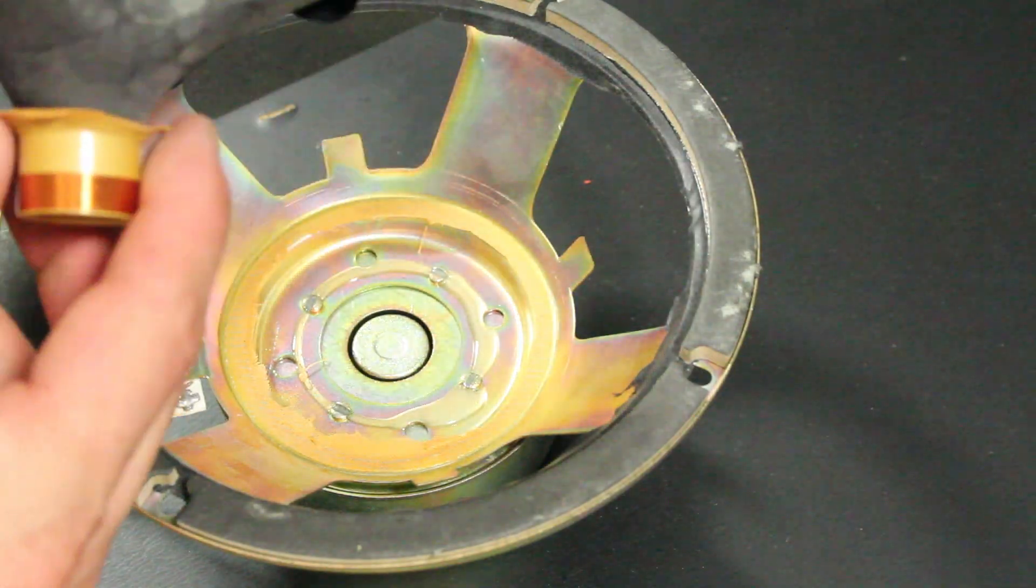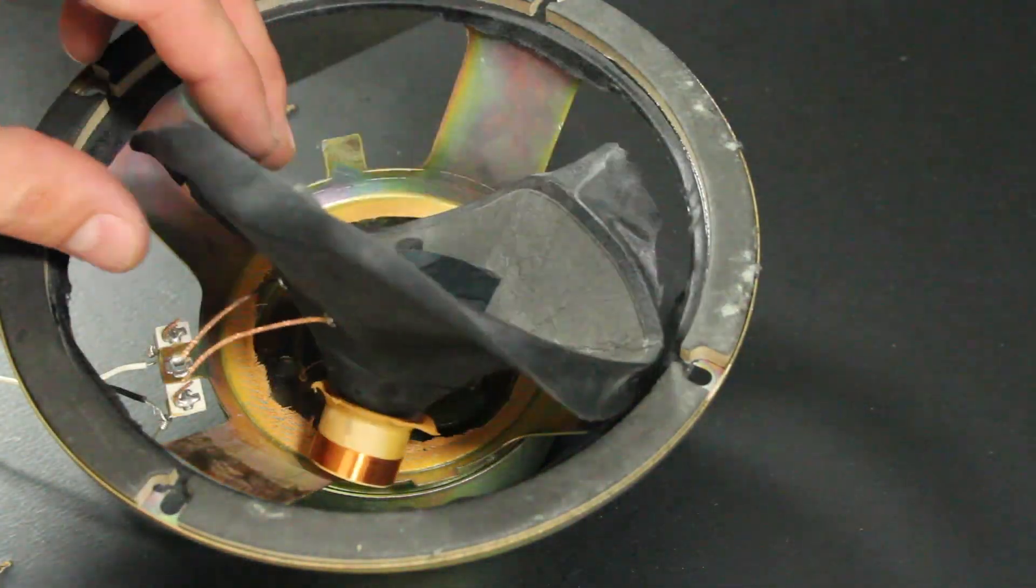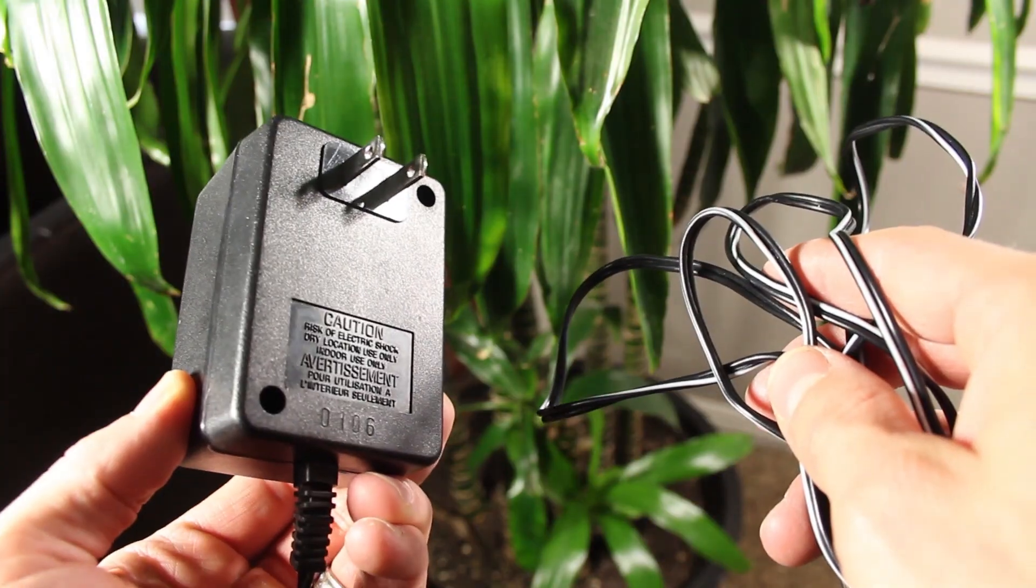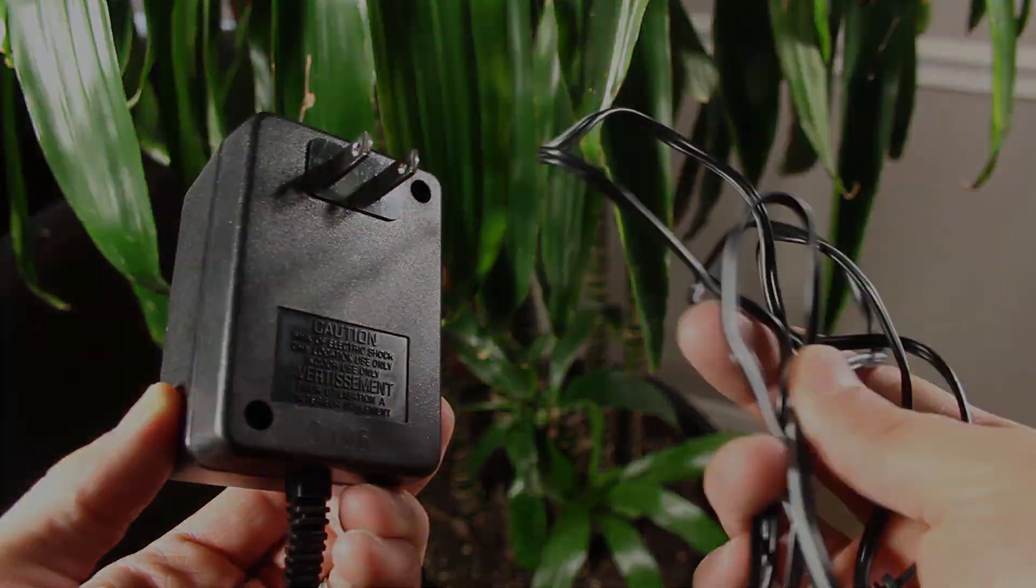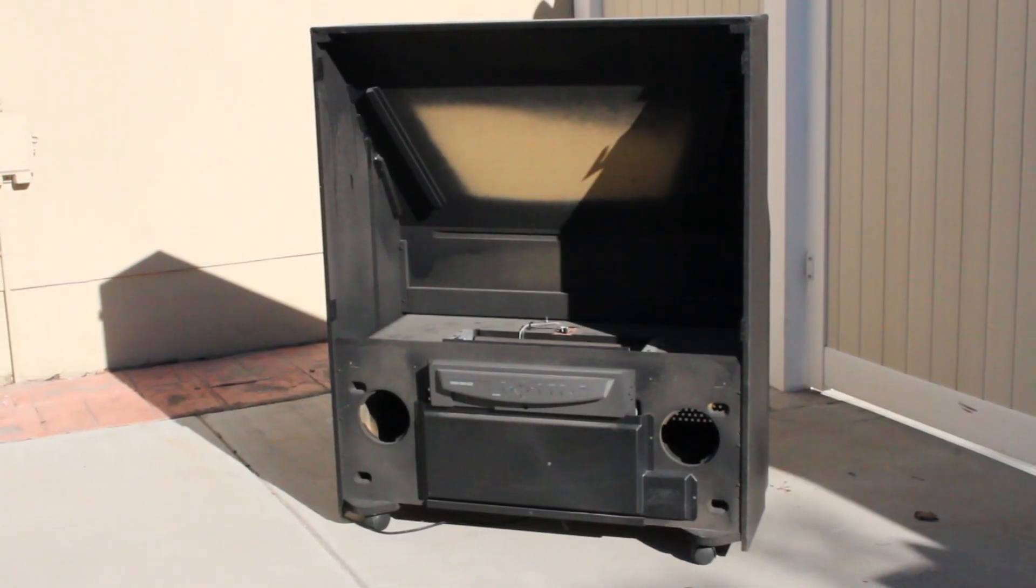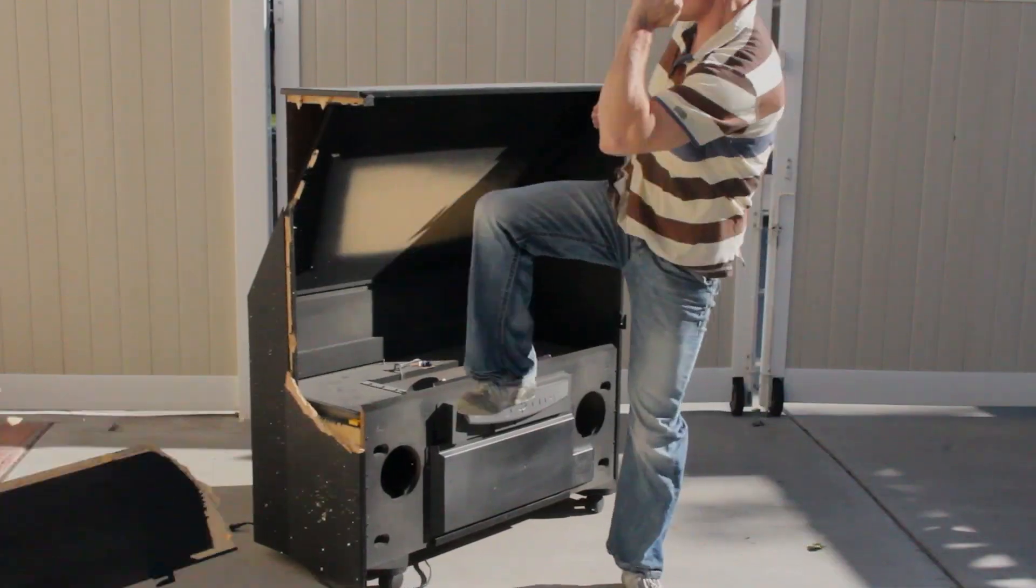But what about insulated copper wire? That can be expensive, and where do we get it? Well almost anything electronic will have some, you just have to know where to look. I know there's some inside this old TV, but I don't have a sledgehammer to bust it open, so I'm going to have to get creative.